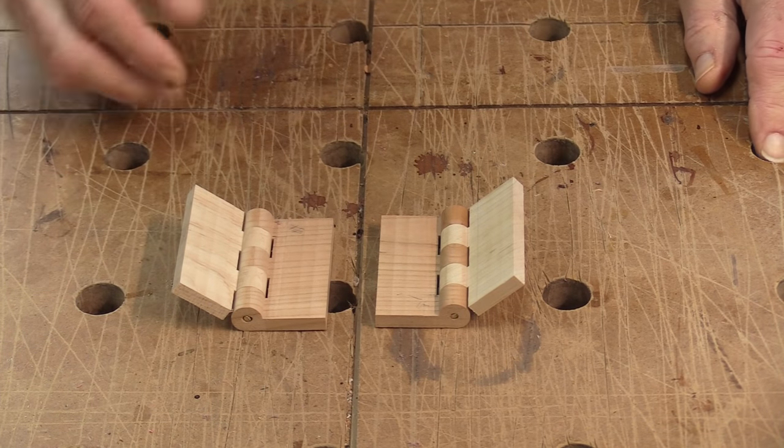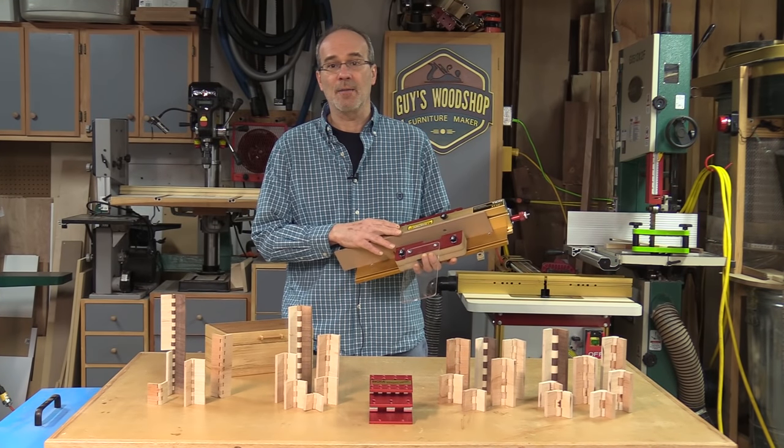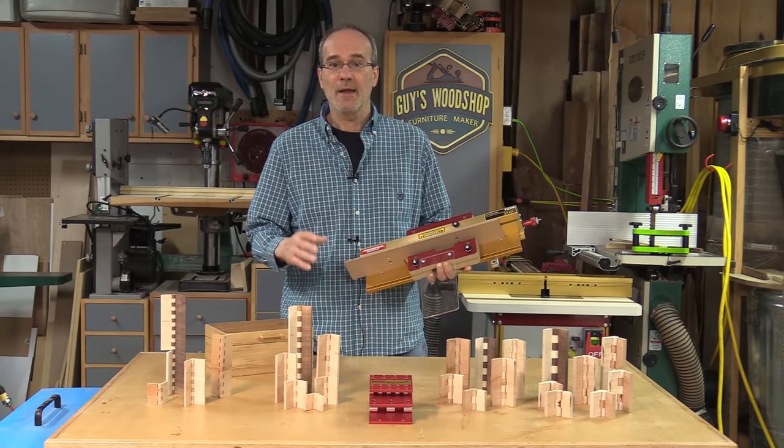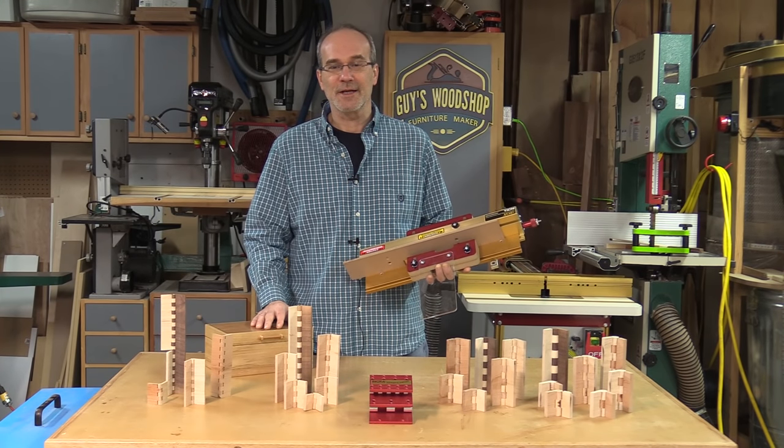Two perfectly sized two and a half inch hinges. So as you can see, these hinges are really easy to make with the Inker Eyebox and Inker Hinge Crafter. Lots of different sizes can be made, and they're a perfect complement to your next handmade project. Thanks so much for watching, and we'll see you next time.